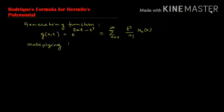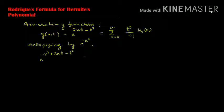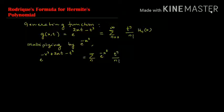Multiplying both sides by e^(-x²), we get e^(-x² + 2xt - t²), which equals the summation over n of e^(-x²) times t^n divided by n! times Hn(x).